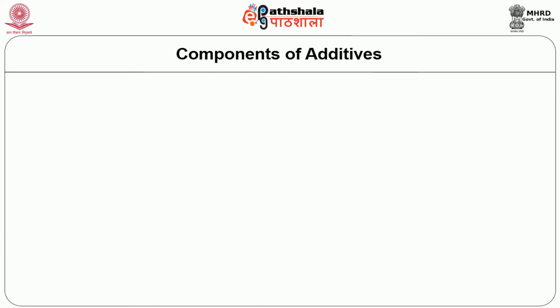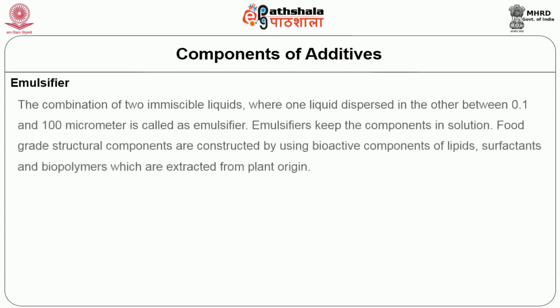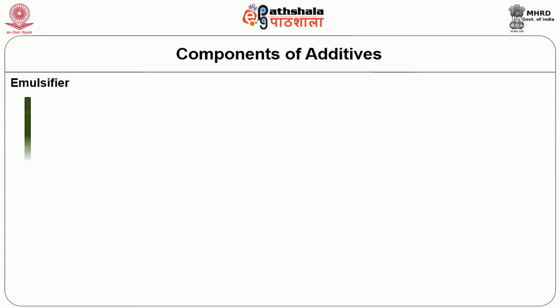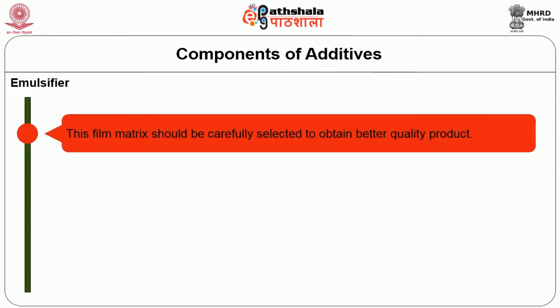Let us see about components of additives. The first one is emulsifiers. The combination of two immiscible liquids where one liquid is dispersed in the other between 0.1 and 100 micrometers is called an emulsion. Emulsifiers keep the components in solution. Food-grade structural components are constructed using bioactive components of lipids, surfactants, and biopolymers extracted from plant origin, for example soy, starch, and pectin. The film matrix should be carefully selected to obtain a better quality product.